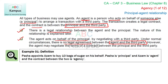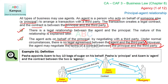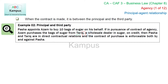However, the agent may negotiate the terms of the contract between the principal and the third party. So there is no contract between agent and third party — the contract is between principal and third party. To illustrate with an example: Pasha appoints Azam to buy ten bags of sugar on his behalf. Here Pasha is the principal, Azam is the agent, who will communicate with the third party. The contract between Pasha and Azam is called the contract of agency.